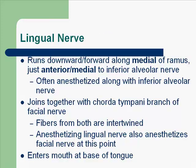The lingual nerve is another sensory nerve. It runs downward and forward along the medial aspect of the ramus, just anterior and medial to the IA nerve. It is often anesthetized along with the inferior alveolar nerve. The lingual nerve joins with the chorda tympani branch of the facial nerve, and fibers from both are intertwined, so anesthetizing the lingual nerve often also anesthetizes the chorda tympani. The lingual nerve enters the mouth at the base of the tongue.